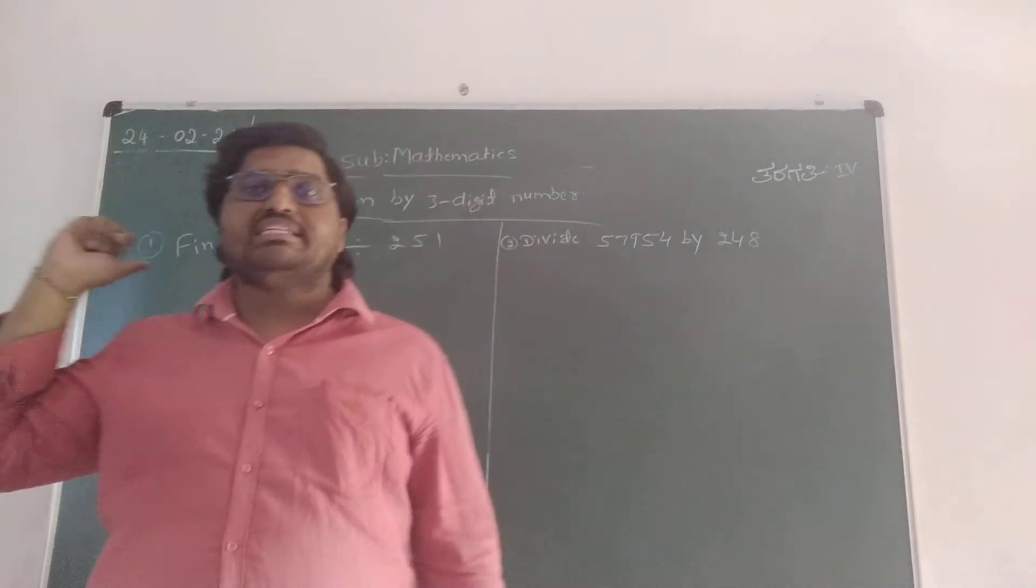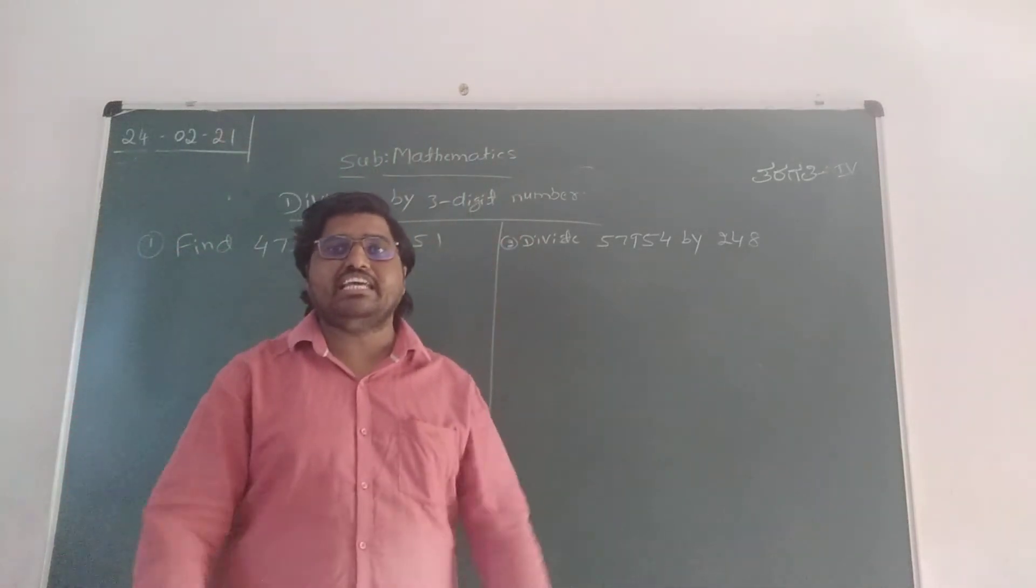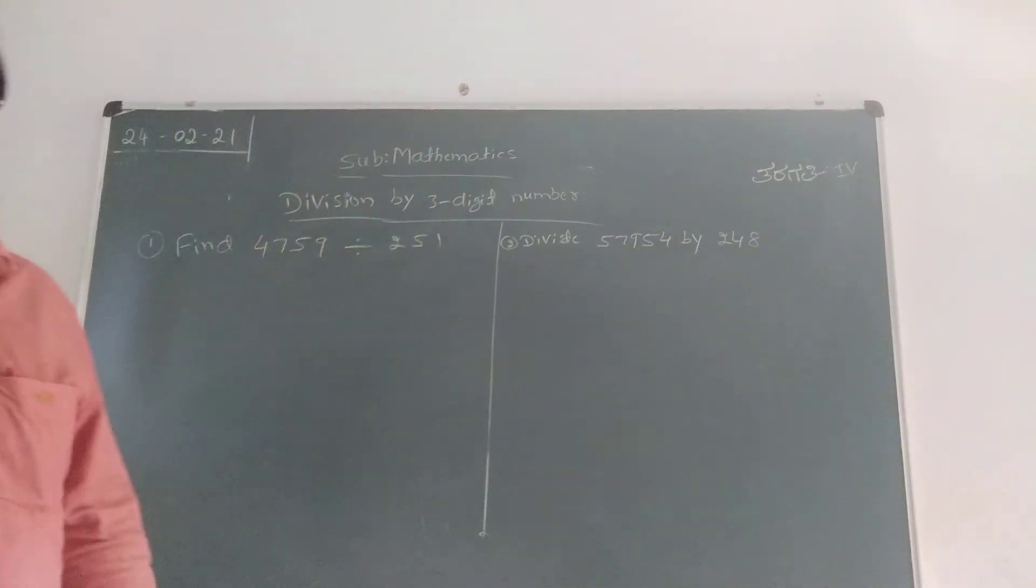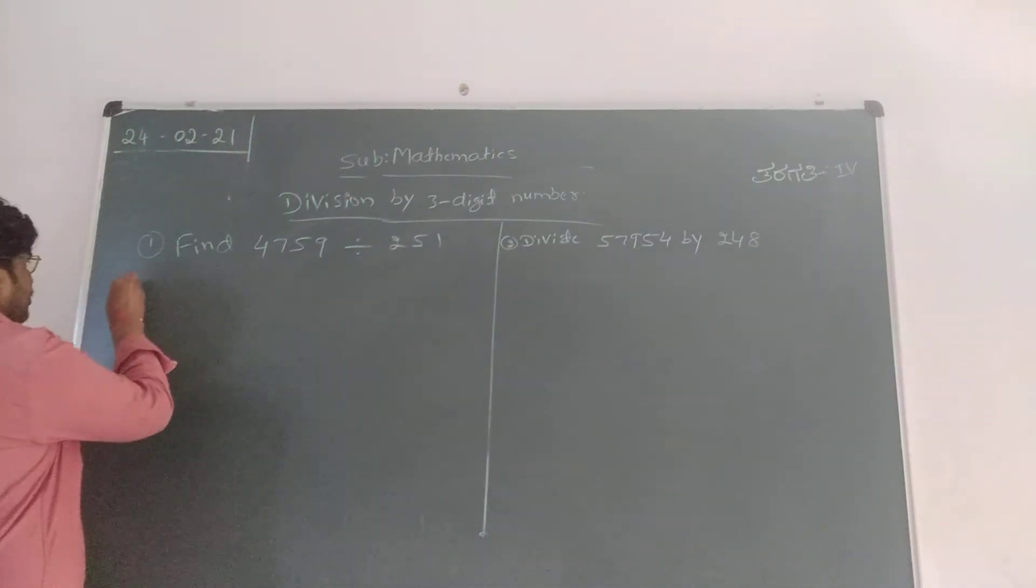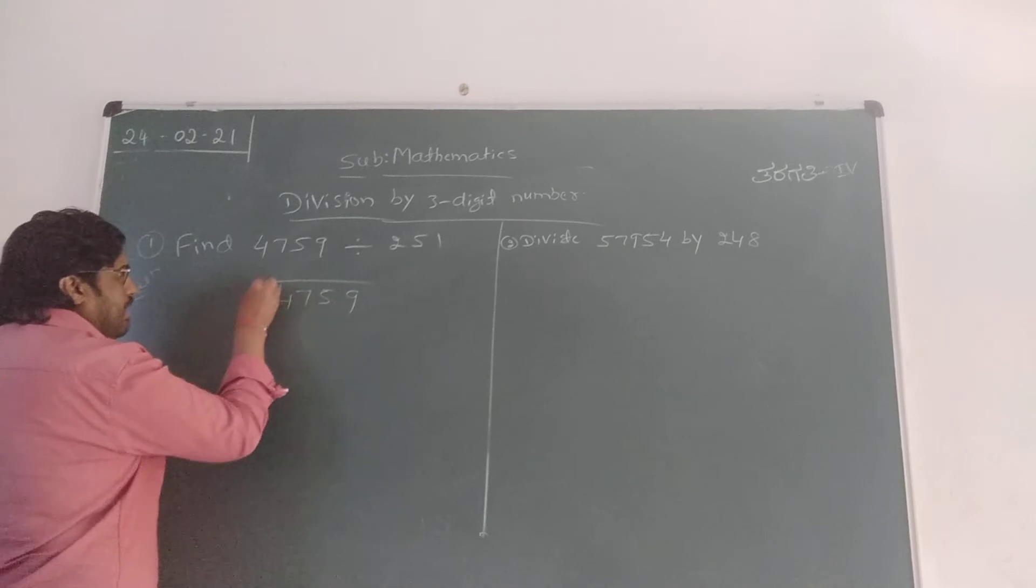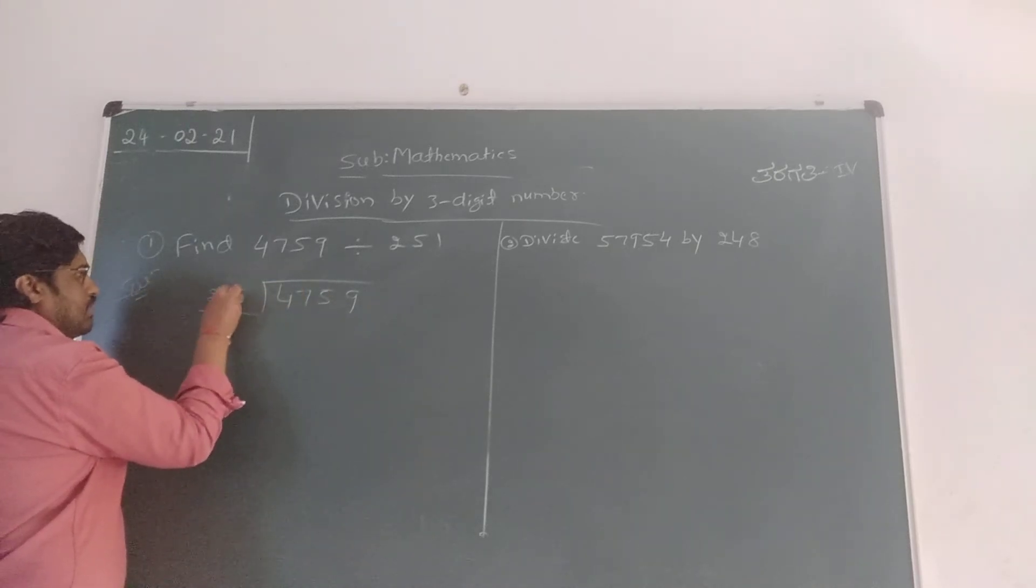Division by 3-digit numbers is exactly the same procedure as division by 2-digit numbers. Here are the same things whatever we did in the previous class. We have to divide 4759 by 251.